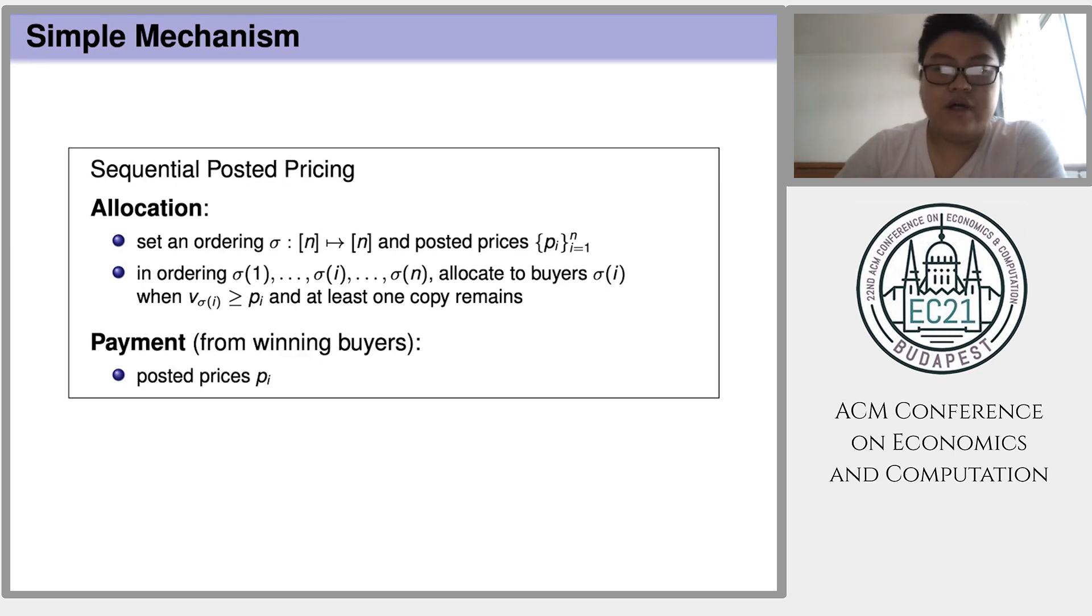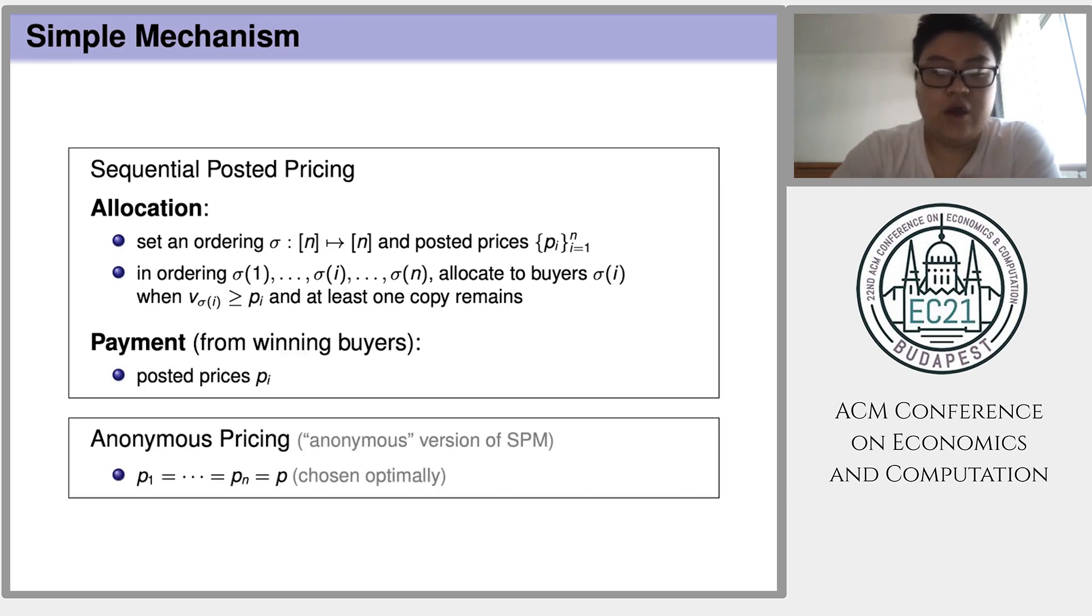The last simple mechanism we will consider is anonymous pricing. Actually, anonymous pricing is a special version of sequential posted pricing. The extra requirement is that the posted prices for different buyers must be uniform. That is, a single uniform posted price for everyone.